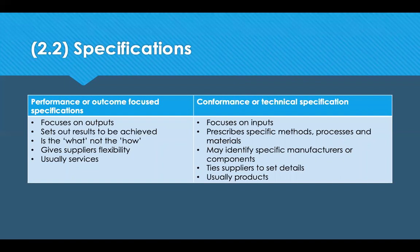Conformance or technical-based specifications are usually for products. You detail exactly what the product or service is made of, like a recipe. Responses to a conformance spec should have identical offerings. You often see this used in industries like pharmaceuticals and agriculture, where the particular product, manufacturer component, or whatever it is, is absolutely necessary.